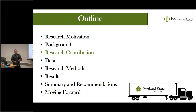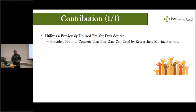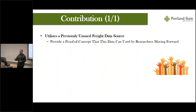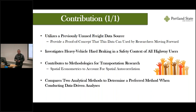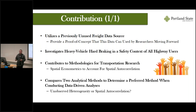Why is this work important and how does it contribute? First, the EROAD data used here has never been used in the United States before — it can serve as a proof of concept for researchers, practitioners, state agencies, and federal agencies. Second, it investigates heavy vehicle hard braking explicitly in a safety context for all highway users, which has not been done before. Third, it contributes to methodologies for transportation research — specifically the use of spatial econometrics to account for spatial autocorrelation. Finally, it compares two analytic methods to determine which is preferred for a specific data set, essentially asking: unobserved heterogeneity or spatial autocorrelation?